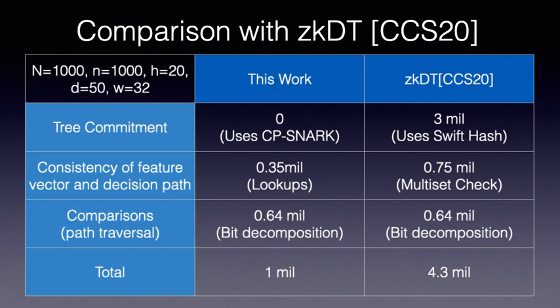We also tabulate the circuit complexity incurred by each method for a specific setting of the parameters as shown. Even at 1000 samples, our approach is around 4.5 times more efficient for moderately sized decision tree.